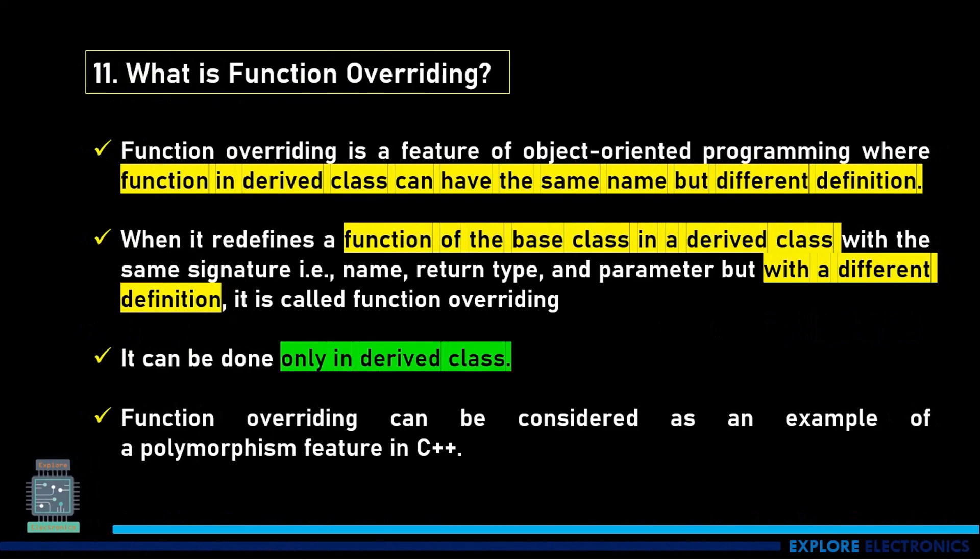Then what is function overriding? Function overriding is a feature of OOPs where a function in a derived class can have the same name but different definition. When it redefines a function of a base class in a derived class with the same signature—that is name, return type, and parameter—but with a different definition, it is called function overriding. It can be done only in derived class.